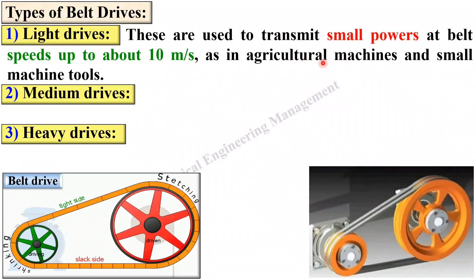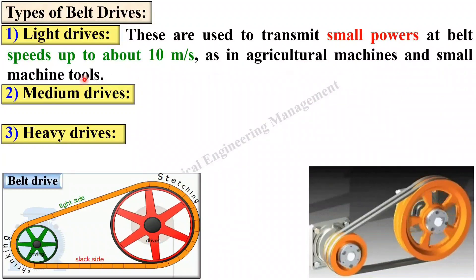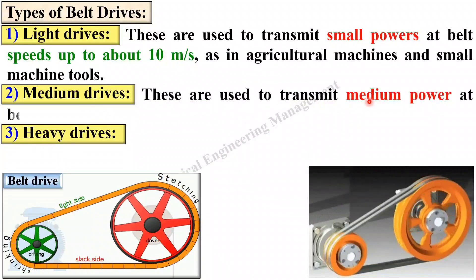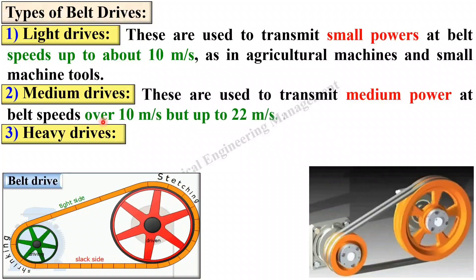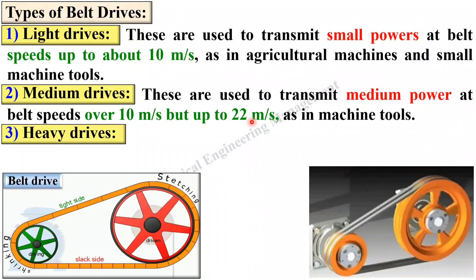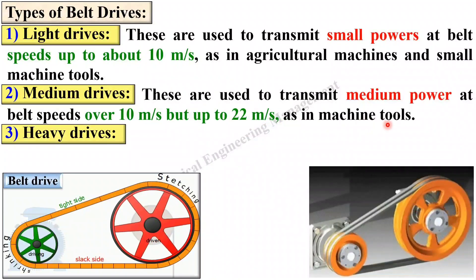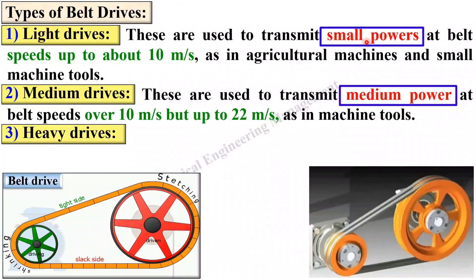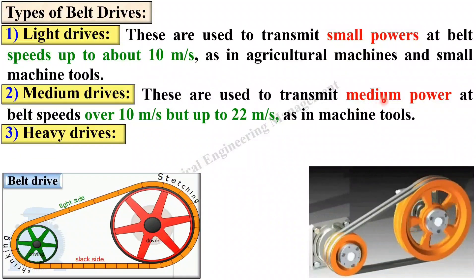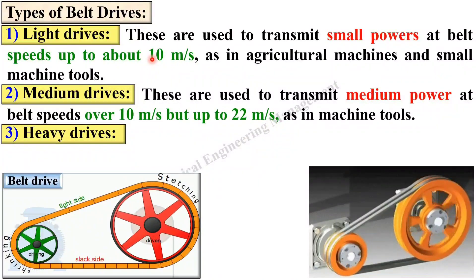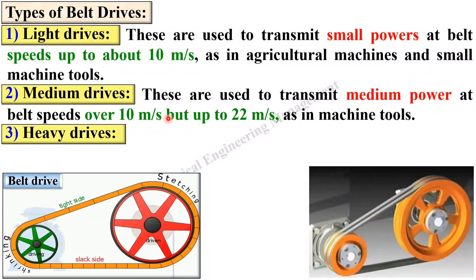Medium drives are used to transmit medium power at belt speed over 10 meters per second but up to 22 meters per second, and are generally used in machine tools. To compare: light drives are used for small powers, whereas medium drives are used for medium power. For medium drives the speed is more than 10 meters per second but up to 22 meters per second.